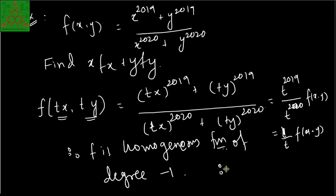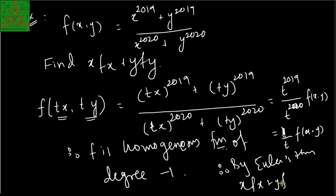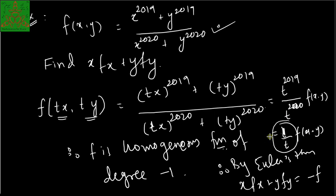Therefore f is a homogeneous function of degree −1. By Euler's theorem, x·f_x + y·f_y = −1·f = −f. So the answer is −f. In this manner you can solve many examples using Euler's theorem.